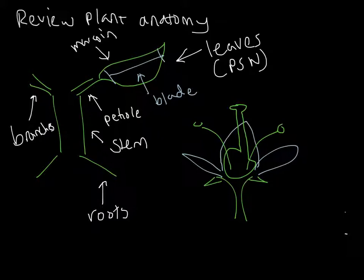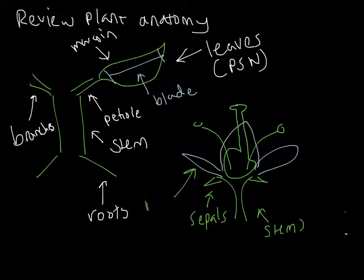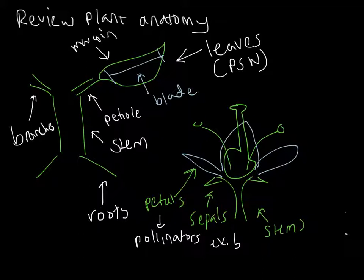When looking specifically at a flower, you'll notice things like the sepals, which are special leaves, the stem, and petals. Petals are really important because they attract pollinators — examples of pollinators would be things like bees and flies.